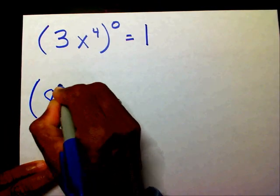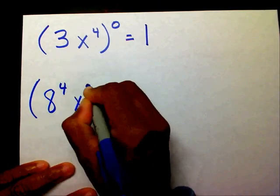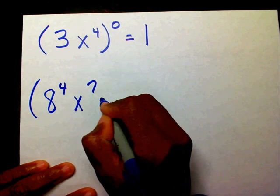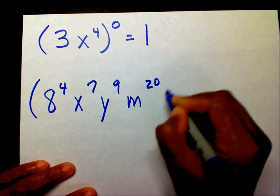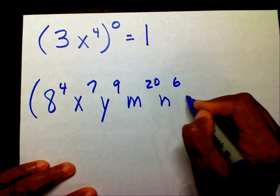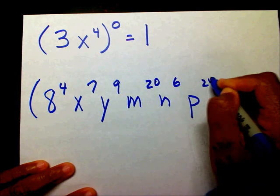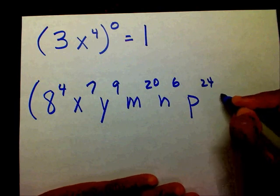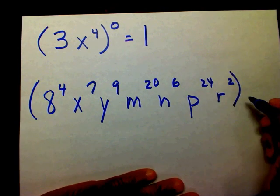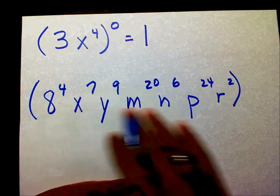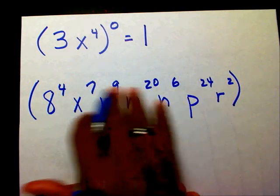parentheses eight to the fourth, x to the second, seventh, y to the ninth, m to the twentieth, n to the sixth, p to the twenty-fourth, r to the second. I can have all these bases, all of these bases, all